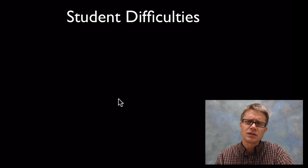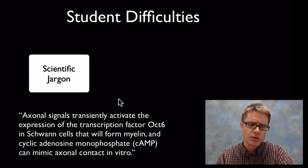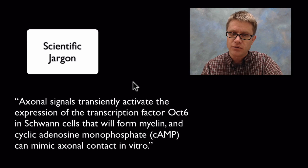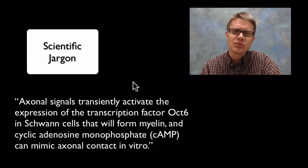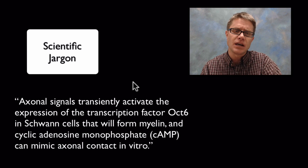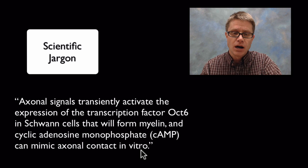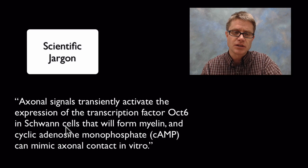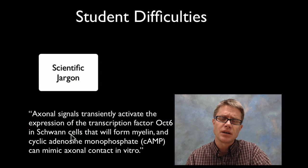This whole idea of making sense of information is a struggle for students. Students find difficulties especially in reading science text. The number one reason is scientific jargon. Let me read you a little section from this journal: Axonal signals transiently activate the expression of the transcription factor Oct6 in Schwann cells that will form myelin and cyclic adenosine monophosphate can mimic axonal contact in vitro. I actually know what that means, but most of you don't. The reason is we don't live science day to day, and so that jargon gets in the way. If I were to tell you that in vitro means in a test tube, that would help. If I were to tell you that Schwann cells will wrap around neurons to speed nerve transmission and form a fatty substance called myelin, that might help. Students struggle with scientific reading because they don't have this foundation.